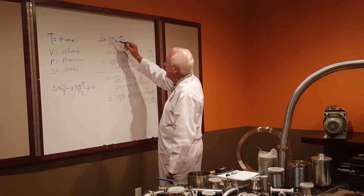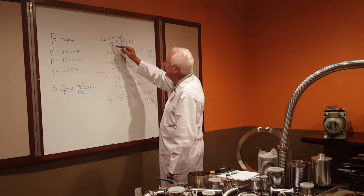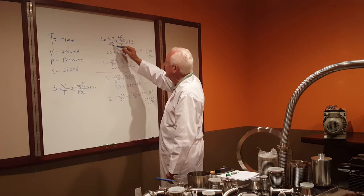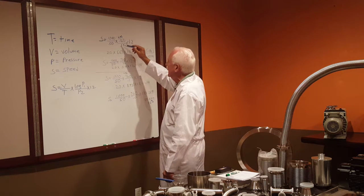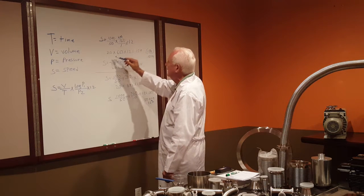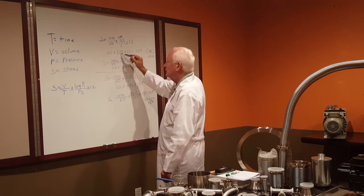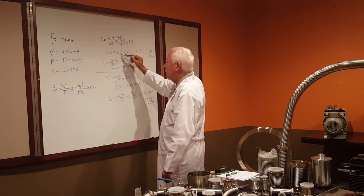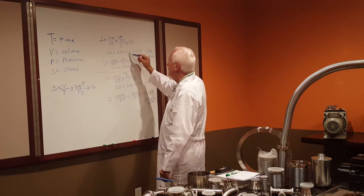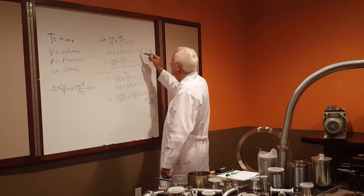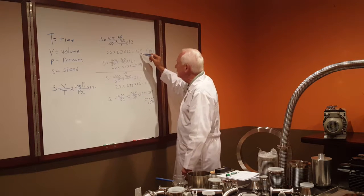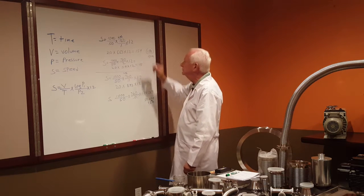As an example, I've taken a 1000 cubic foot vessel and I want to get down in 50 minutes. I'm starting at atmosphere and I want to go to 1 torr. So that's 20 times the log of 760 over 1, times 1.2 — so I need 159 CFM.